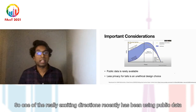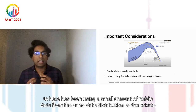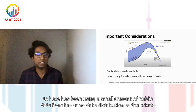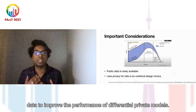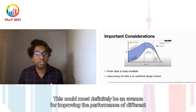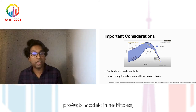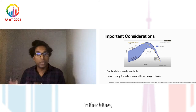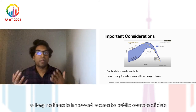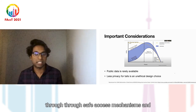One exciting recent direction has been using a small amount of public data from the same distribution as the private data to improve the performance of differentially private models. This could be an avenue for improving differentially private models in healthcare, as long as there is improved access to public sources of data through safe access mechanisms.